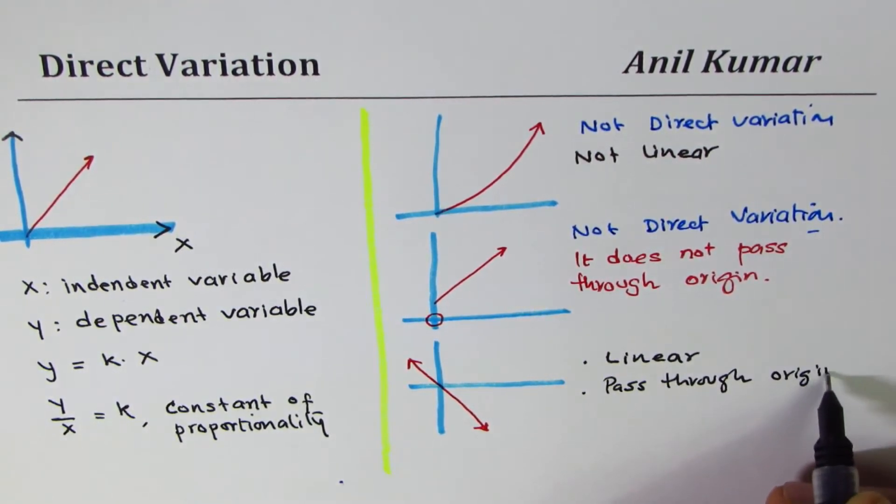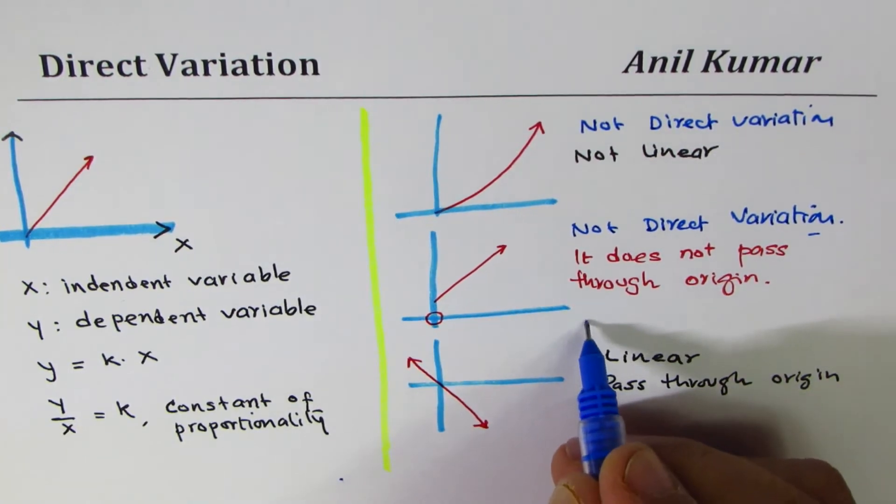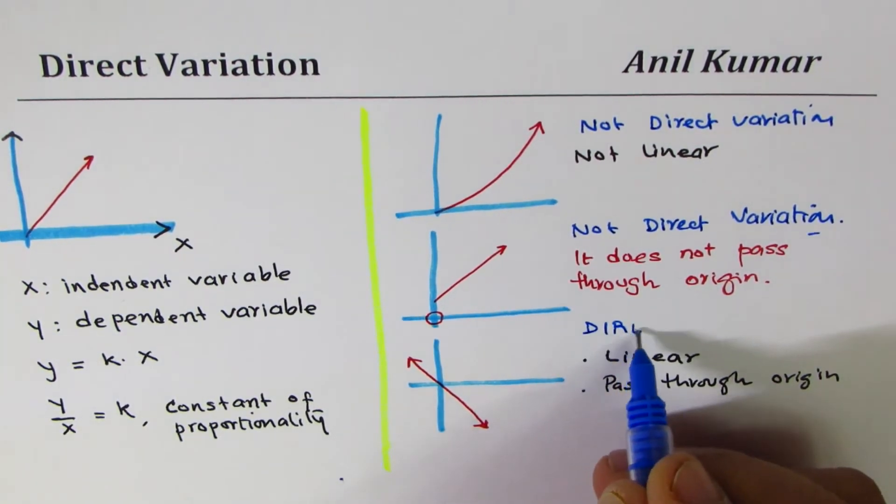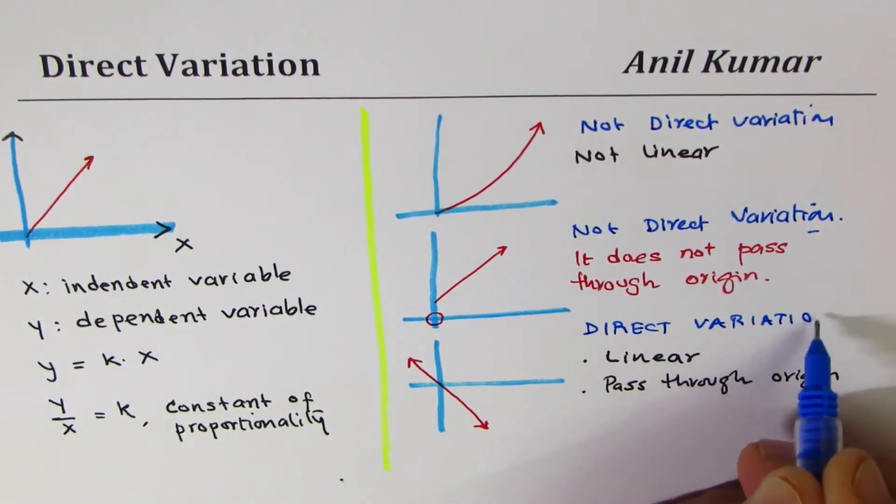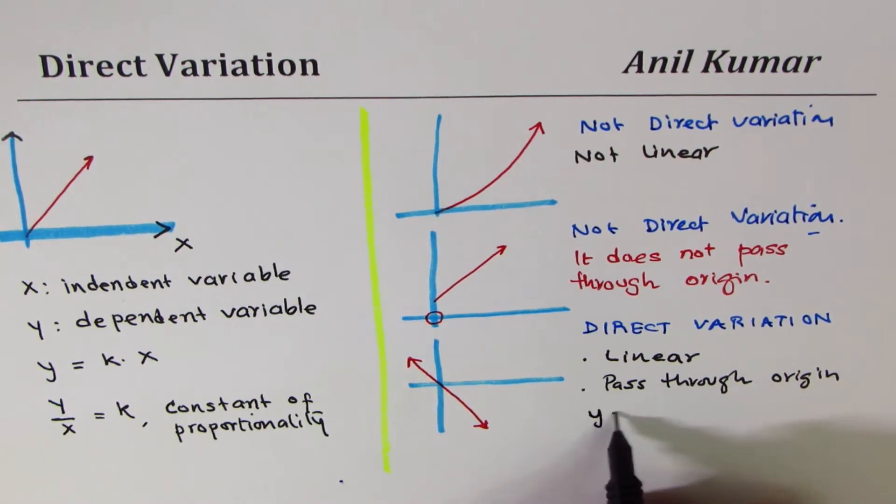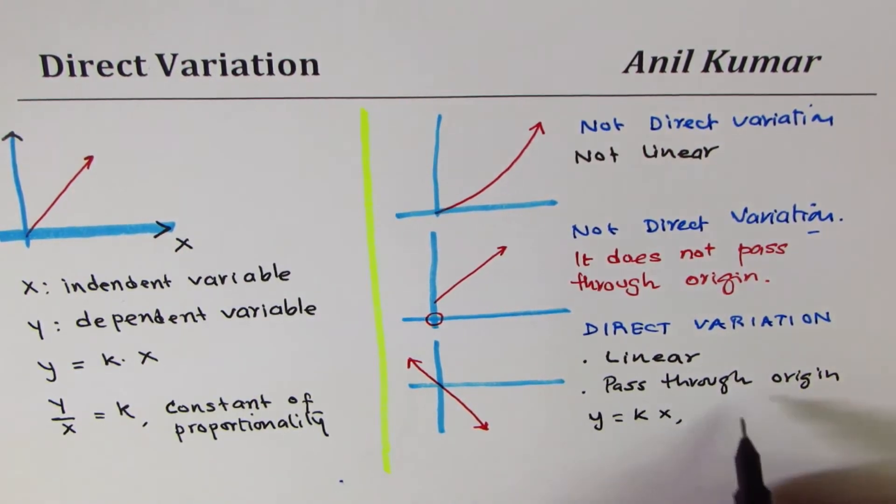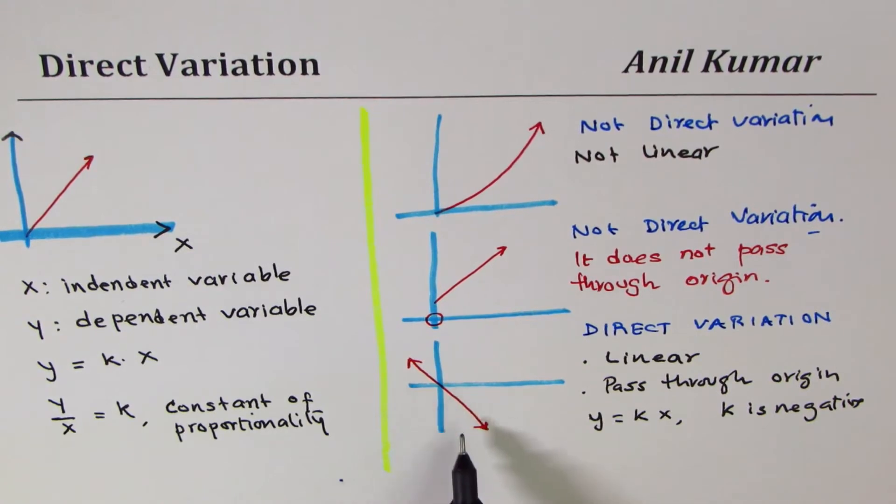Now the question is, is it direct or not? The answer which will surprise you is that it is a direct variation. The equation of this can be represented as y equals kx, only thing is k is negative but it is a constant. So this is also a direct variation.